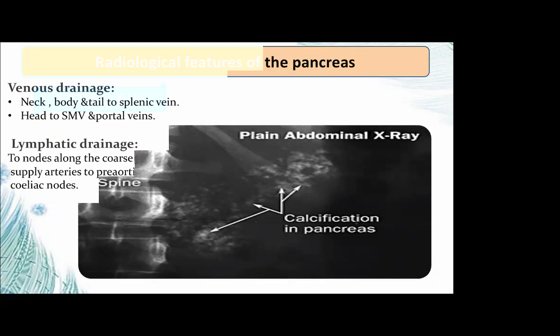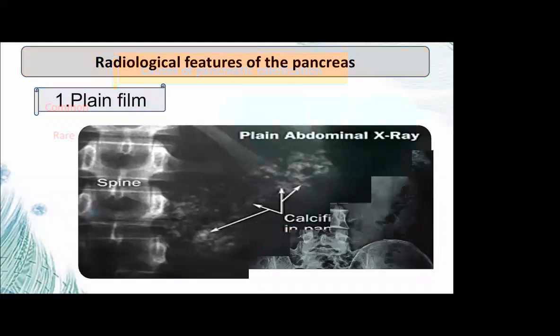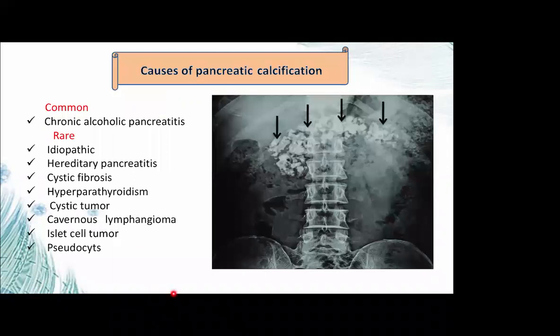Radiological features of the pancreas on plain X-ray: the pancreas is not seen on plain X-ray except when calcified. Calcification is seen as a transverse structure at the level of L1-L2. The most common cause is chronic alcoholic pancreatitis. Other causes include cystic tumour, islet cell tumour, diabetic, dystrophic calcification, and cystic fibrosis. Serous and mucinous cystadenoma also show dystrophic calcification.